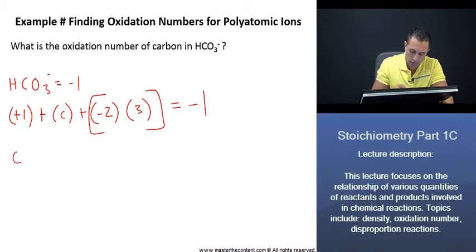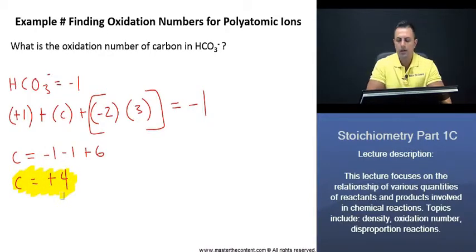Now, if we isolate here for our carbon, we find that the value is just going to be negative 1, negative 1, plus 6, and that is going to be equal to plus 4. That there is the oxidation number for carbon.